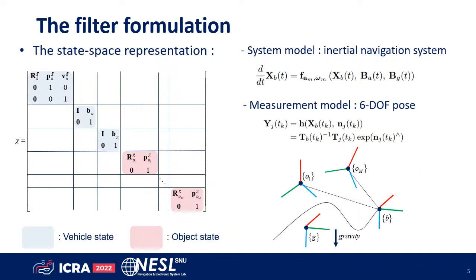Here is the proposed filter formulation. The state space lives in matrix Lie groups with extended pose, IMU biases, and object poses. The system model is an inertial navigation system that is a group-affine system when biases are eliminated. Also, a robot measures relative pose of objects by some pose detector.